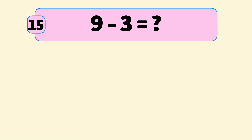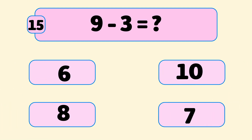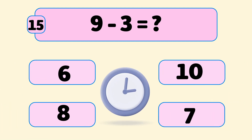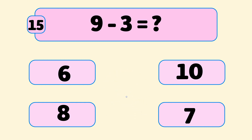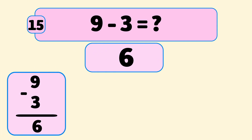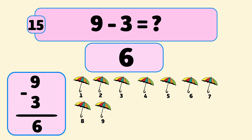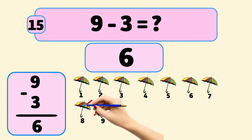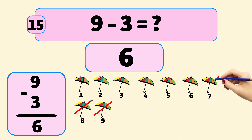What is 9 minus 3? The answer is 6. We start with 9 umbrellas and remove them one by one: 9, 8, 7. Now we have 6 umbrellas left.